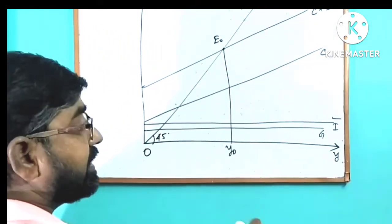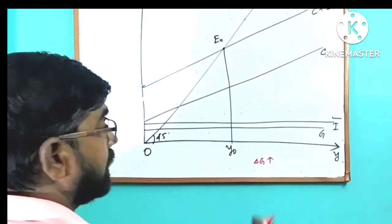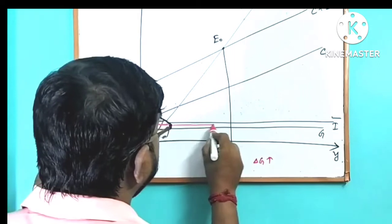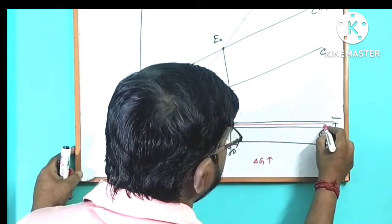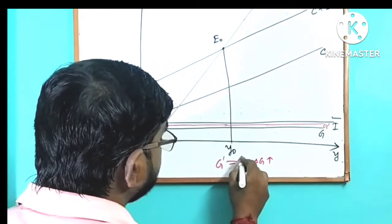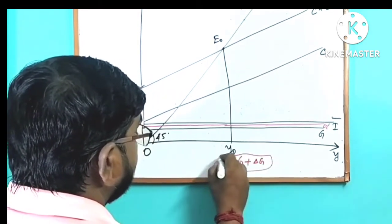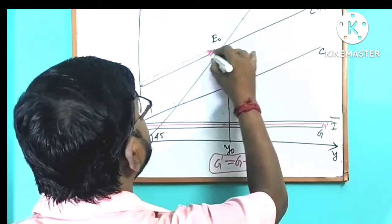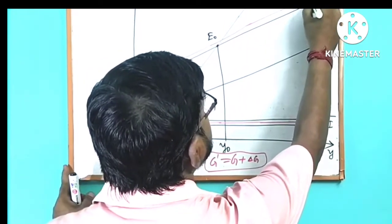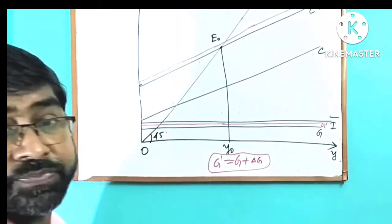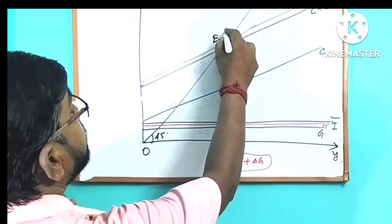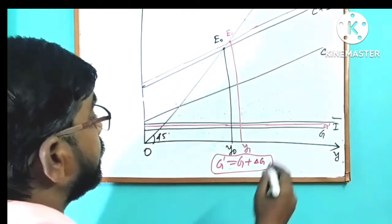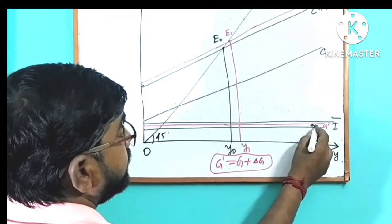We can see that the government expenditure is equal to delta G. The government expenditure changes by delta G, and this increase in government expenditure shifts the aggregate demand curve upward.